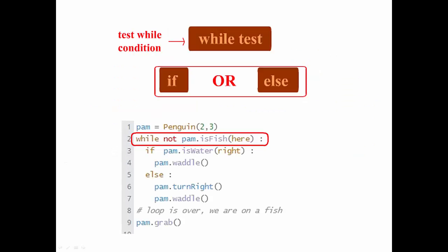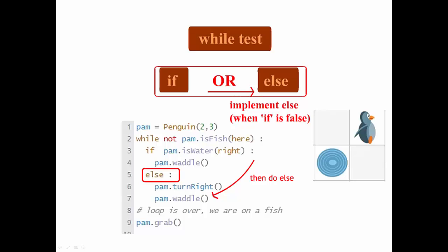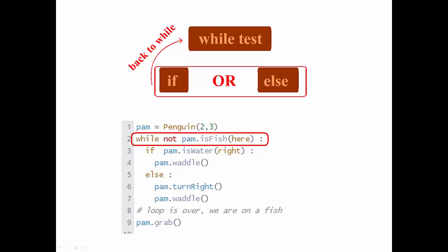So what this code breaks down into is a hierarchy of tests, the overarching one being our while loop. We then go on to check our if test, and if that's true, execute pam.waddle. If that's not true, then we implement else when if is false, but never both. And after we implement one, we go back to the top of our loop and start it again.